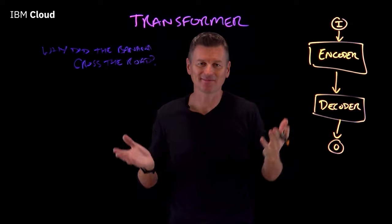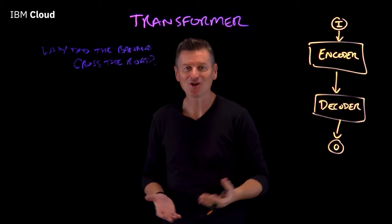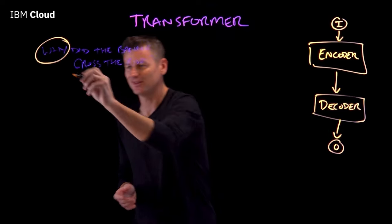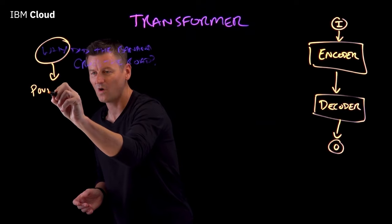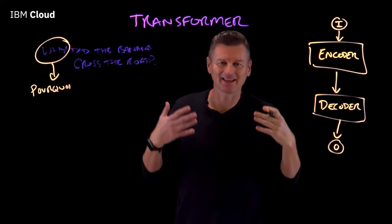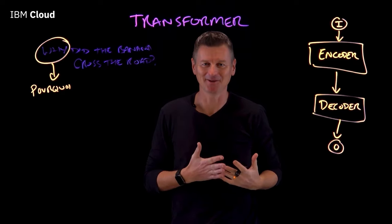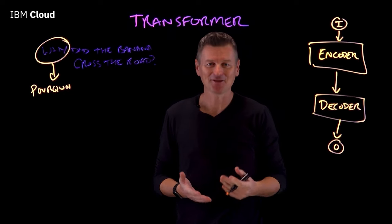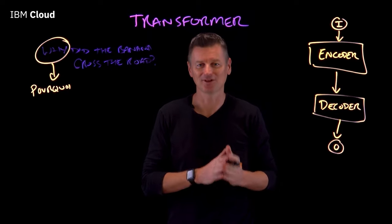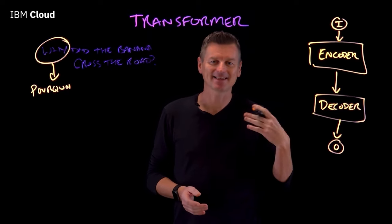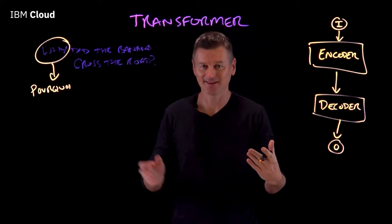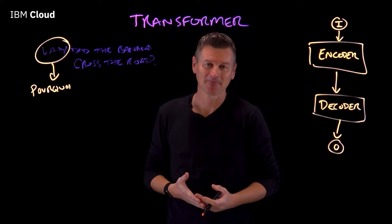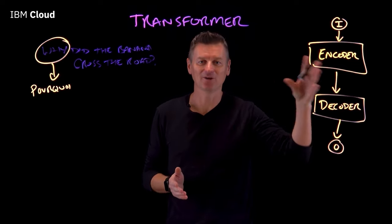On the face of it, translation seems like little more than a basic lookup task — convert the 'why' of our English sentence to the French equivalent 'pourquoi'. But of course language translation doesn't really work that way. Things like word order in phrases often mix things up. The way transformers work is through sequence-to-sequence learning, where the transformer takes a sequence of tokens — in this case words in a sentence — and predicts the next word in the output sequence.